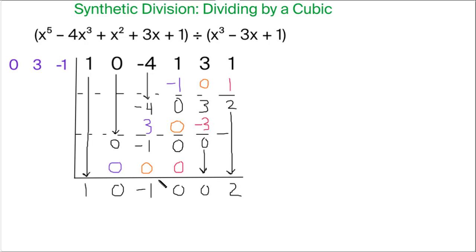Now there's a vertical line that goes right here. And that's because we're dividing an x to the fifth polynomial by x cubed. So 5 minus 3 is 2. We should expect an answer, a quotient, that has an x squared in it.